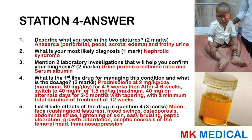This child has periorbital edema, swelling of the upper limbs, swelling of the lower limbs, swelling of the scrotum — a generalized swelling referred to as anasarca. They also have frothy urine. This is most likely consistent with nephrotic syndrome. You can confirm with urine protein-creatinine ratio and serum albumin estimations.